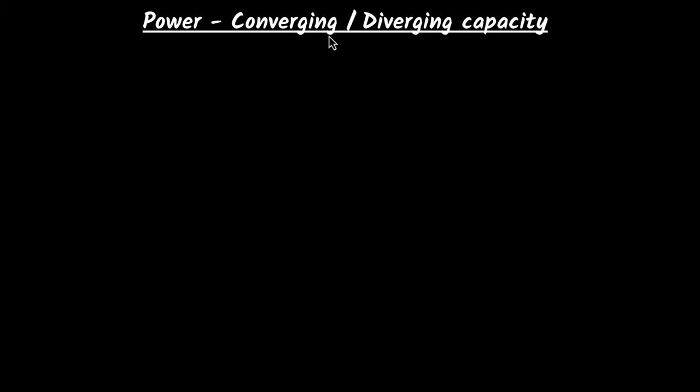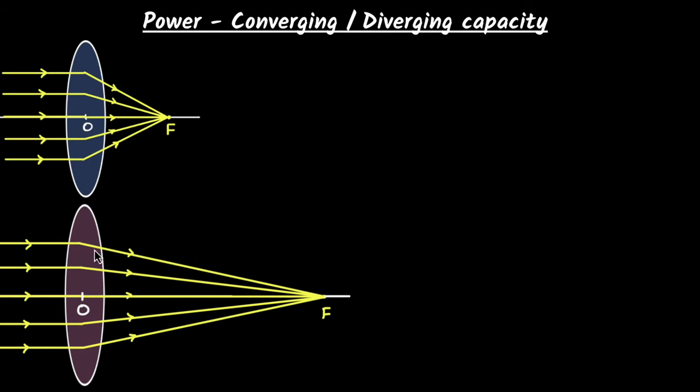In optics, power is defined as the converging or the diverging capacity of your lenses or mirrors. For example, consider these two lenses. Just by using this definition, can you predict which of these two lenses have more power?